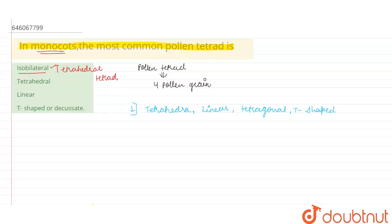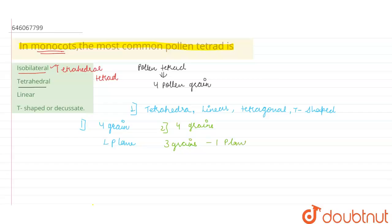If we talk about the next option, which is tetrahedral: in the isobilateral arrangement, four grains are arranged in one plane, whereas in the tetrahedral arrangement, three grains are arranged in one plane and the remaining one grain is in another plane. So tetrahedral would be an incorrect option.